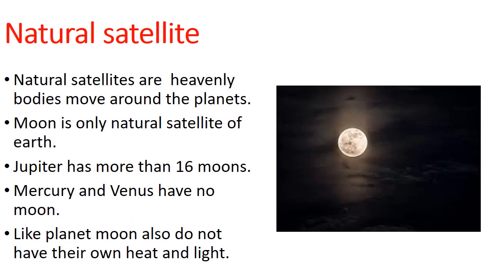Natural satellites are heavenly bodies that move around planets. Moon is the only natural satellite of Earth. Jupiter has more than 16 moons. Mercury and Venus have no moon. Like planets, moon also does not have its own heat and light.